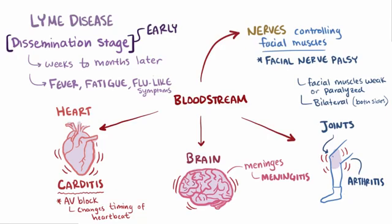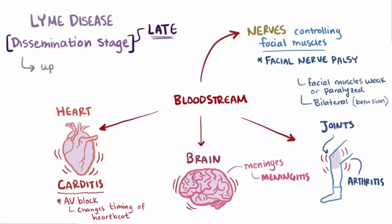If the disease is allowed to progress further to the late dissemination stage, which can generally be up to a year after infection, the major symptom is chronic arthritis of either one joint or a few joints, commonly involving the knee.